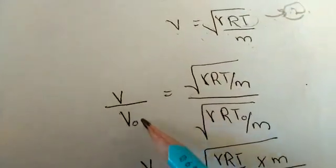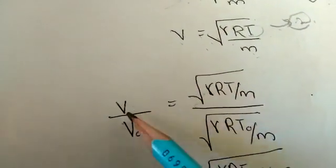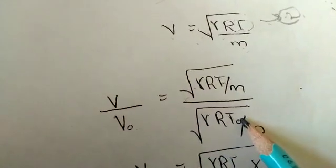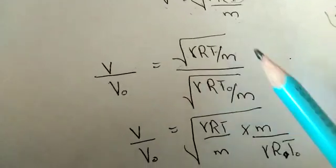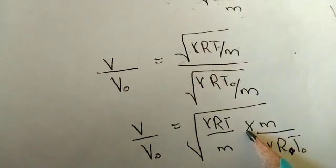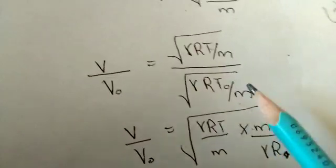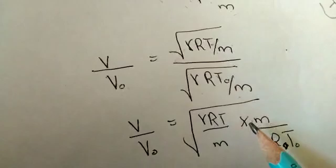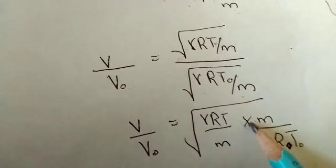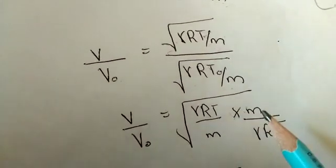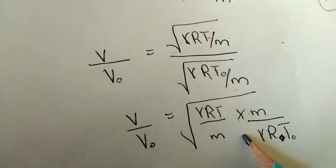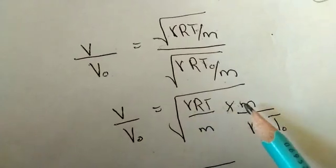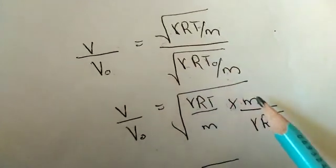Dividing equation 2 over equation 1, we get V divided by V0. We can also write this expression with M in the first place. Instead of the division form, we write the multiplication symbol and invert the term. So V divided by V0 equals gamma RT divided by M, multiplied by M divided by gamma R times T0.